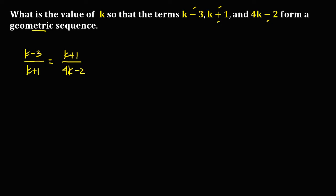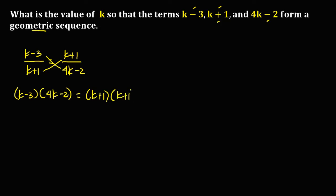To solve for k, we use cross multiplication. So we have (k minus 3) times (4k minus 2) equals (k plus 1) times (k plus 1).